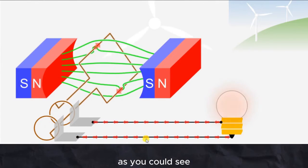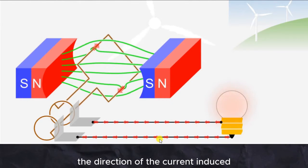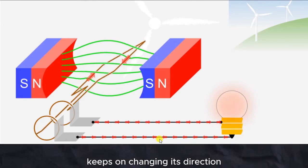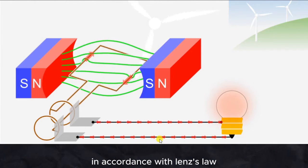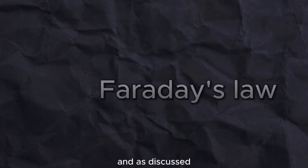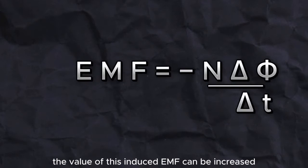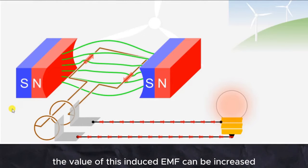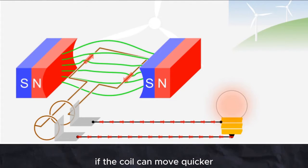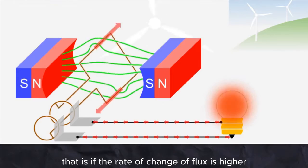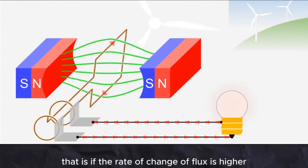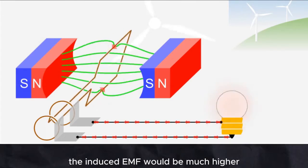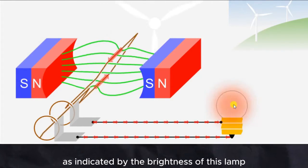As you can see, the direction of the current induced keeps on changing its direction in accordance with Lenz's law. And as discussed in Faraday's law of electromagnetic induction, the value of this induced EMF can be increased if the coil moves quicker — that is, if the rate of change of flux is higher, the induced EMF would be much higher, as indicated by the brightness of this lamp.